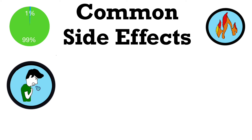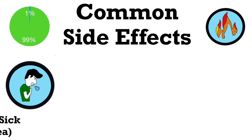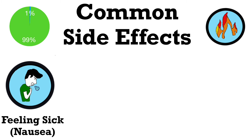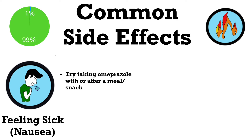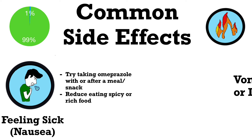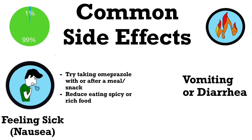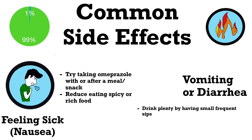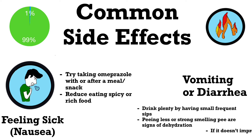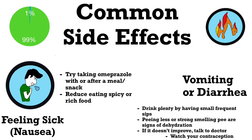Another common side effect is the feeling of sickness — in other words, nausea. To mitigate that, try taking omeprazole with or after a meal or snack, and avoid rich or spicy food. Another common side effect can be vomiting or diarrhea. In that case, drink plenty of water in small frequent sips to avoid dehydration. Watch for signs of dehydration such as peeing less than usual or having strong-smelling pee.